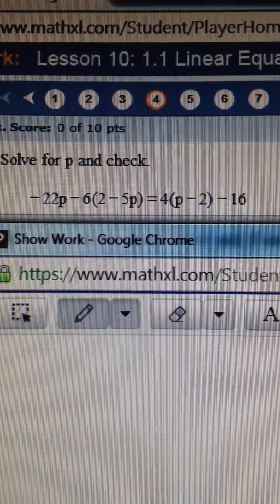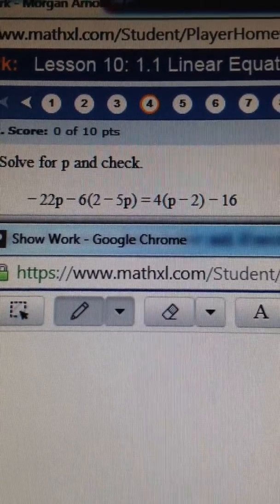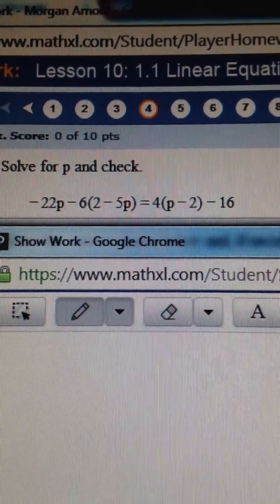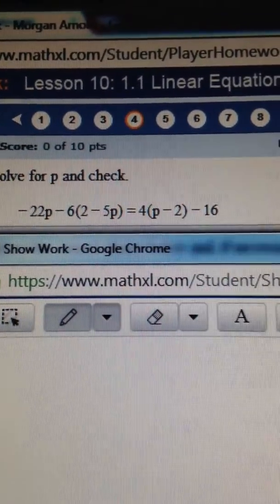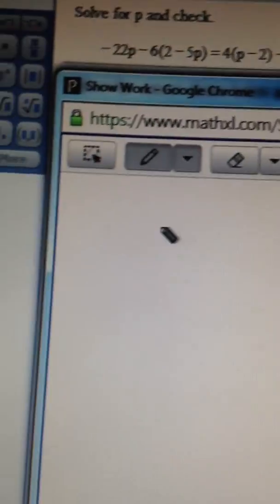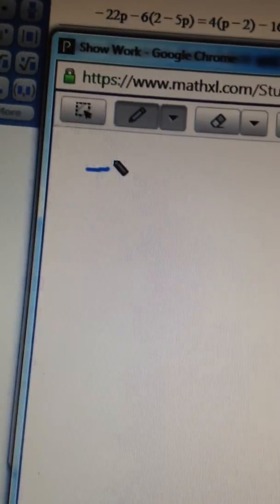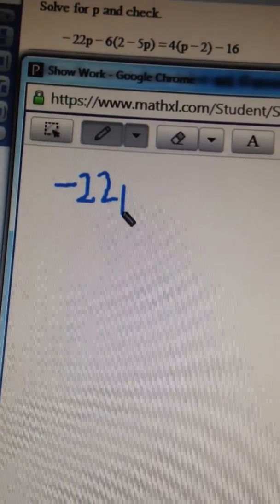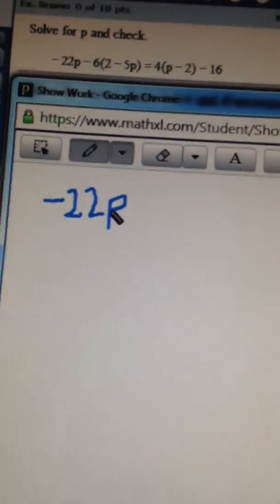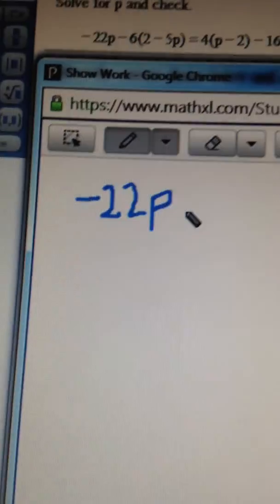We have to solve for p and check. So the first step is to distribute. What we'll do is bring down negative 22p. And again, this does not have to be perfect, just legible.